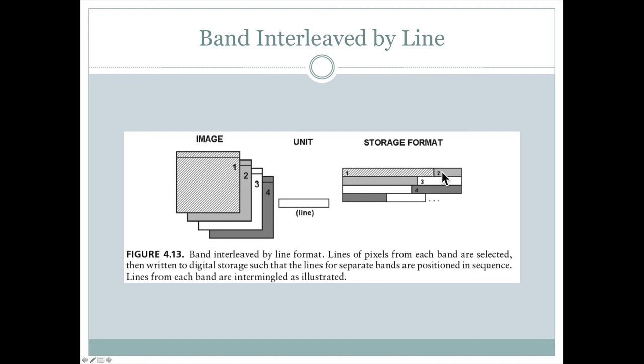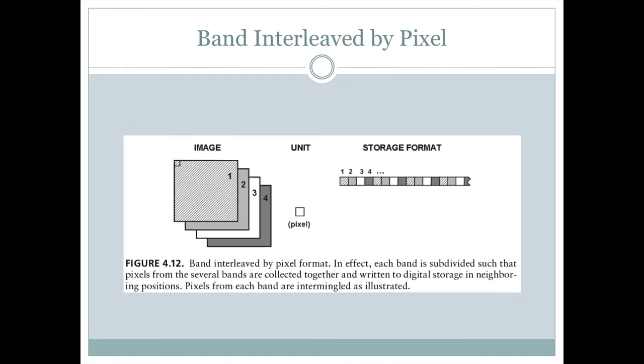So here's the first row of the first band, the first row of the second band, the first row of the third band, and the first row of the fourth band. And that's how it's all organized. So the unit here is the line instead of the pixel. That would be band interleaved by line, which is sometimes abbreviated BIL, much as the first one, band interleaved by pixel, is sometimes abbreviated BIP.